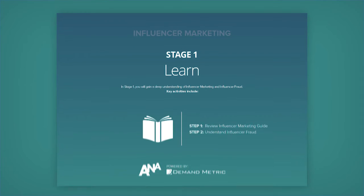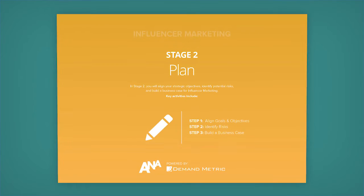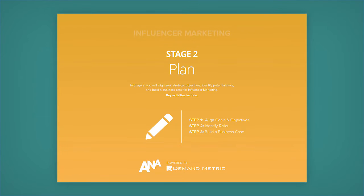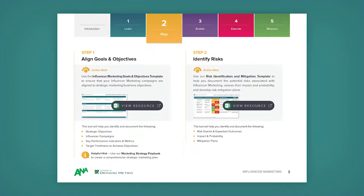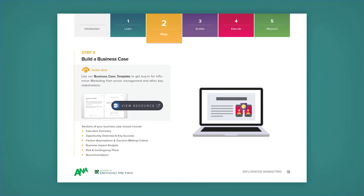Here, your first step is to review the Influencer Marketing Best Practices Guide. In stage number two, it's all about planning. In here, your first step is to align your goals and objectives, identify risks, and then build a business case.